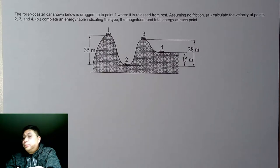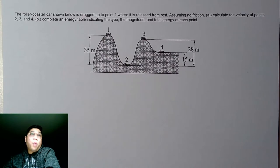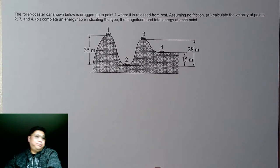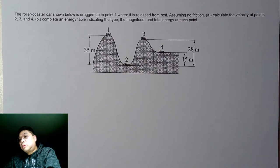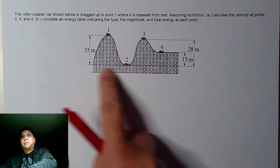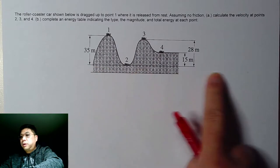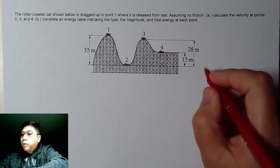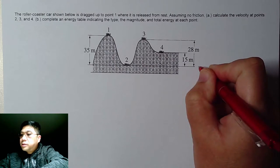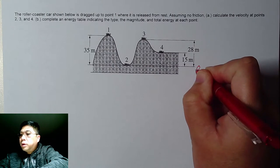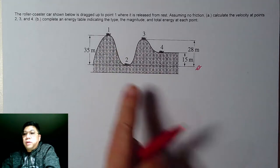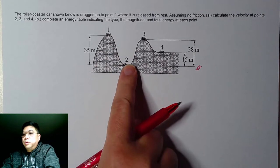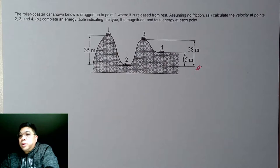As we start this problem, the first thing we should set is where the reference point is. Let's set the lowest point as our zero, as indicated in this problem. The line at the bottom will be our reference point — that's the point where we analyze the location of the roller coaster as it travels from point one, point two, point three, and four.